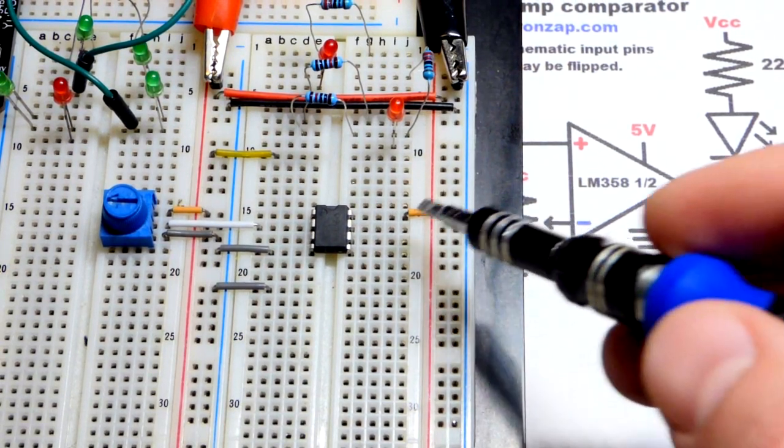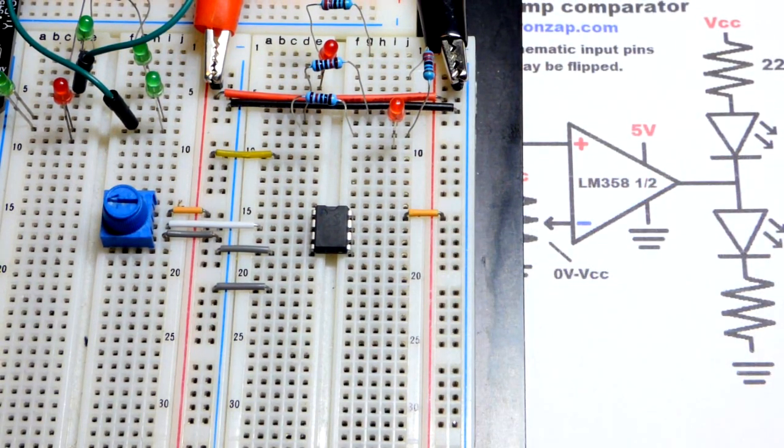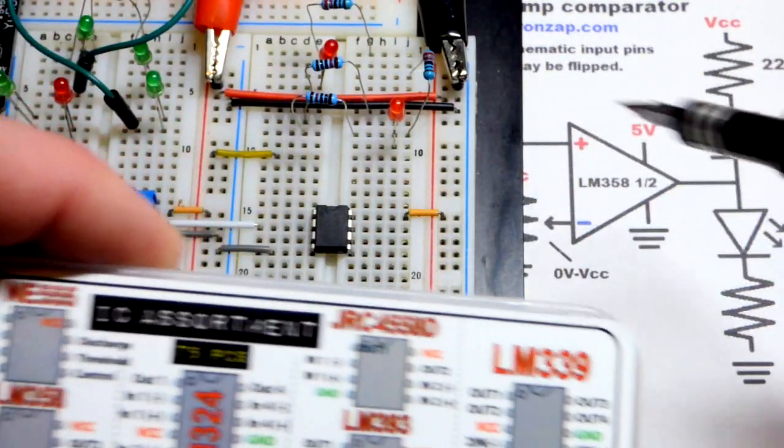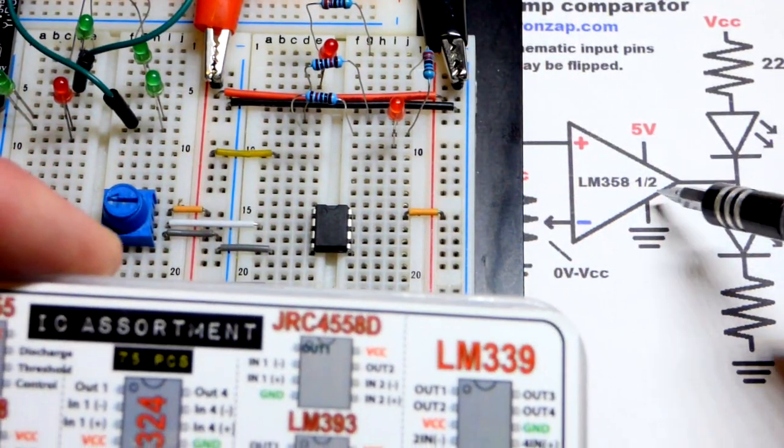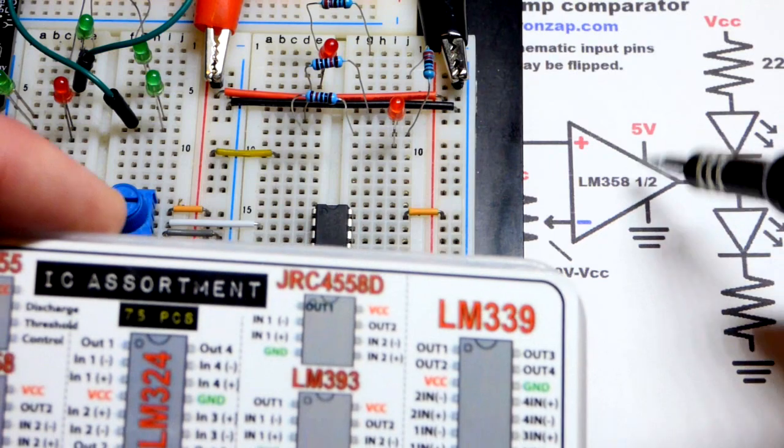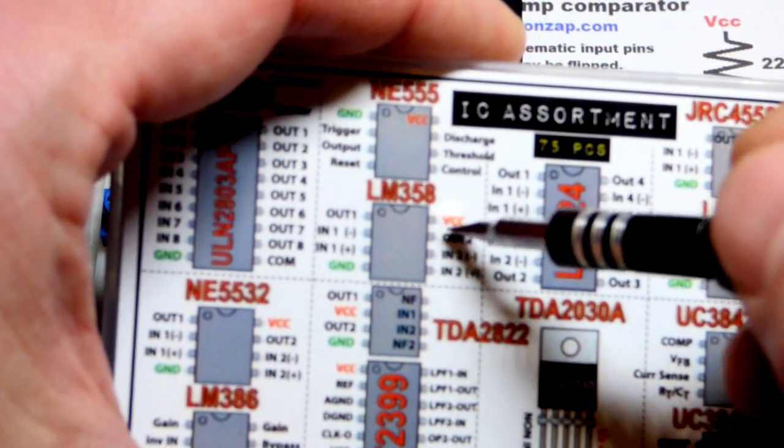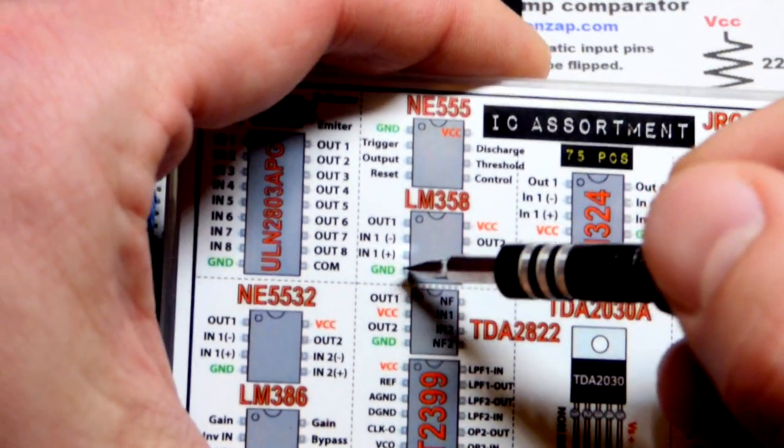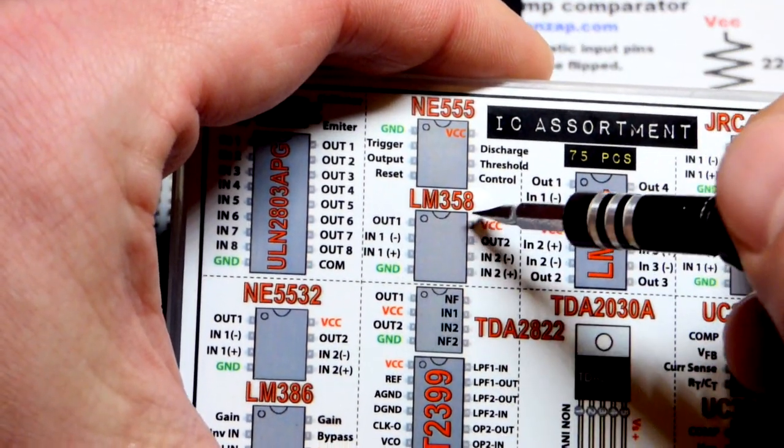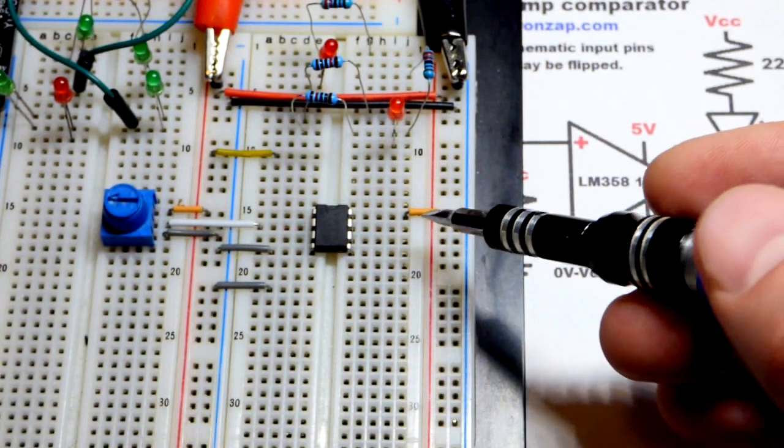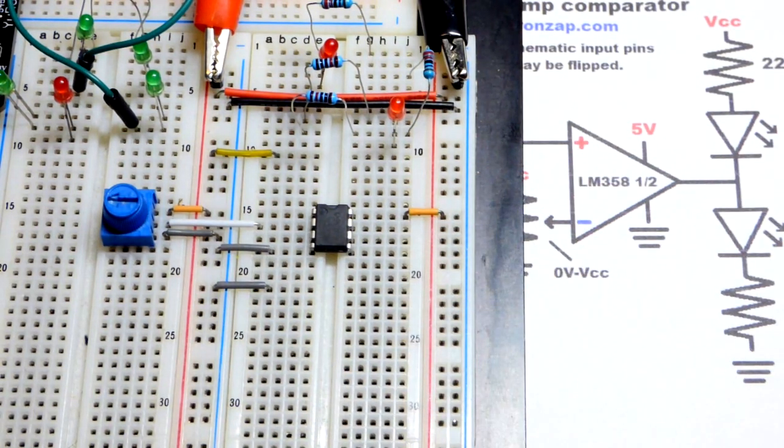Now, we also have to power the integrated circuit. That's not always shown on the schematic. Sometimes they just leave that blank. They assume you know you've got to power it. The power pins, the VCC positive supply is pin 8, and ground is pin number 4. You can see I already wired those up.